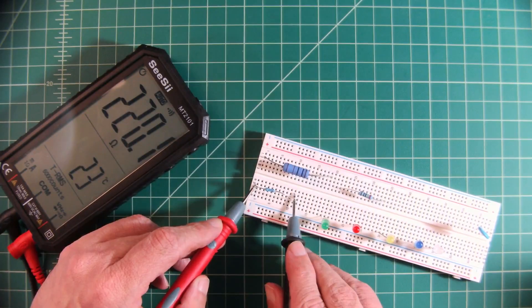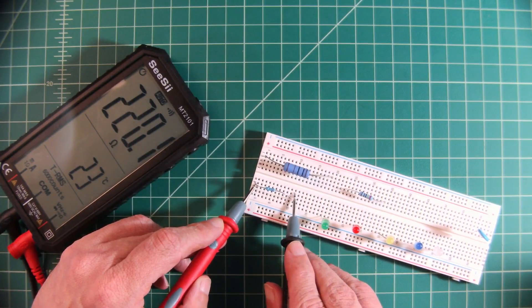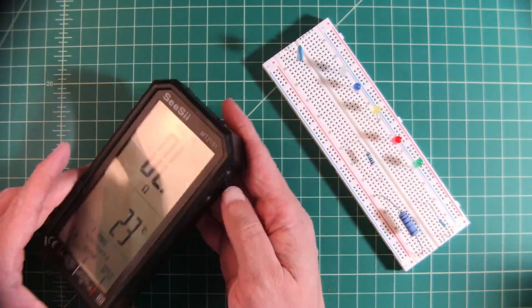And here we are. Let's go ahead. So this is a 220 ohm resistor. Okay. The last thing that I wanted to measure is our non-contact voltage.